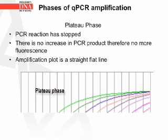In the last phase, known as the plateau phase, the PCR reaction has stopped. There is no increase in PCR product and therefore no more fluorescence is given off. The amplification plot is a straight, flat line.